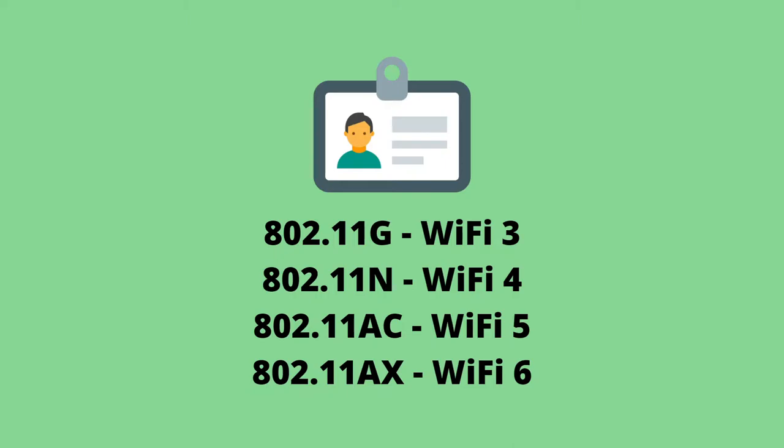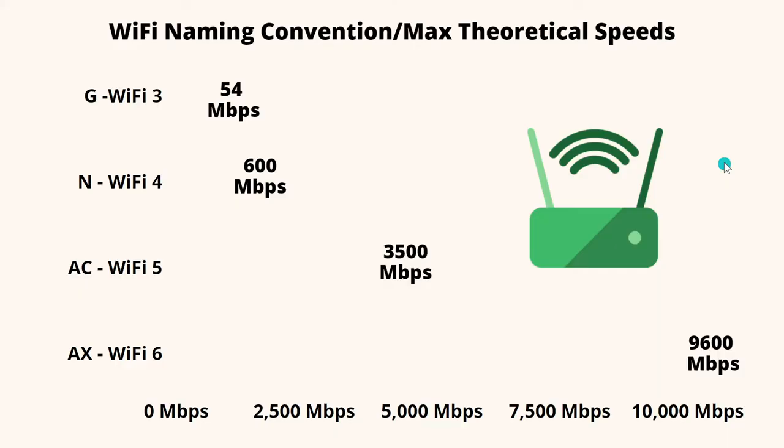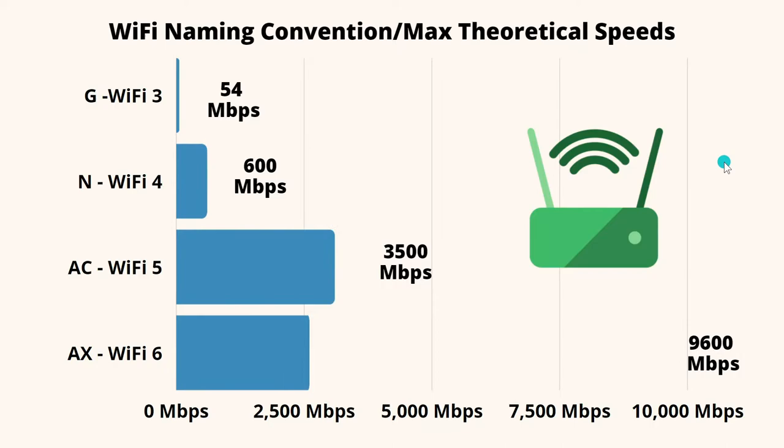There was actually a Wi-Fi 1 and a Wi-Fi 2, but their speeds were so slow and the range was so horrible, it's barely worth mentioning them anymore. Wireless G, or Wi-Fi 3, was just good enough for people to take notice of Wi-Fi, but not good enough to meet the demand once wireless networking became more popular and they started creating more wireless devices.